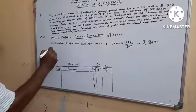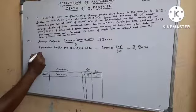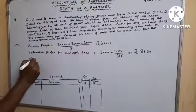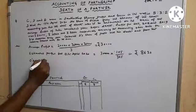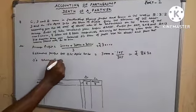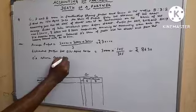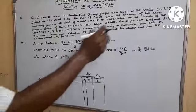Now what to do? We have to find out D's share of profit. D's share is how much given?